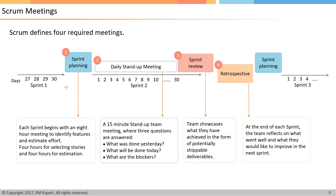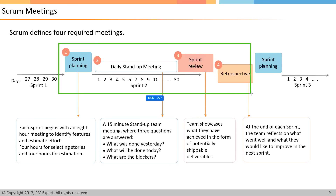Can we now discuss the various meetings, various events within the Sprint? In every Sprint, there are four events or four ceremonies: Sprint Planning, Daily Stand-Up Meetings, Sprint Review, and Retrospection. Let's go through them one by one.